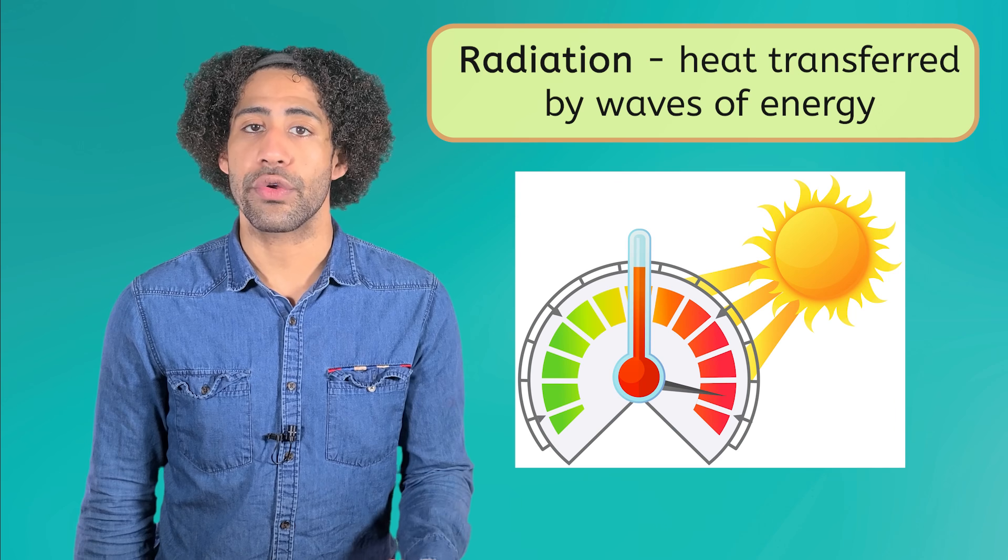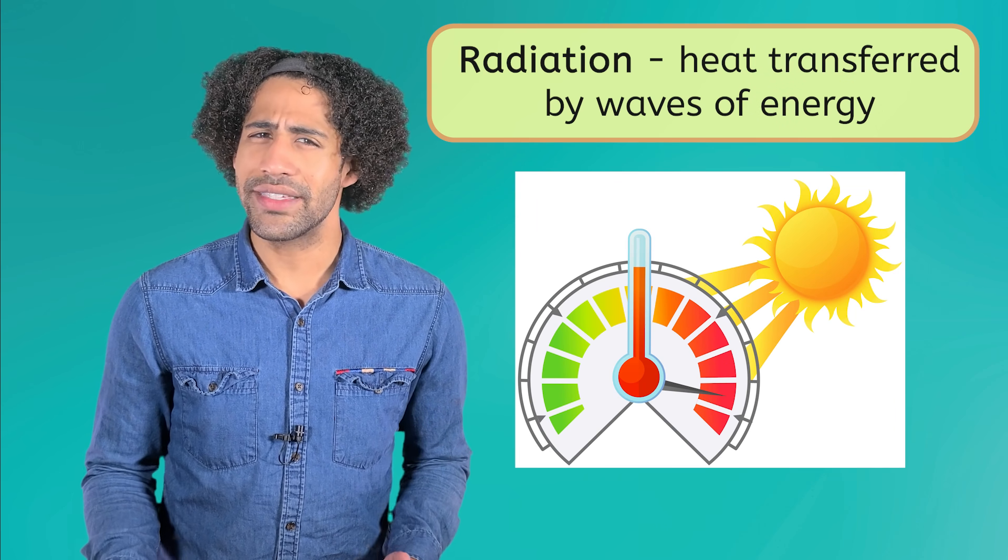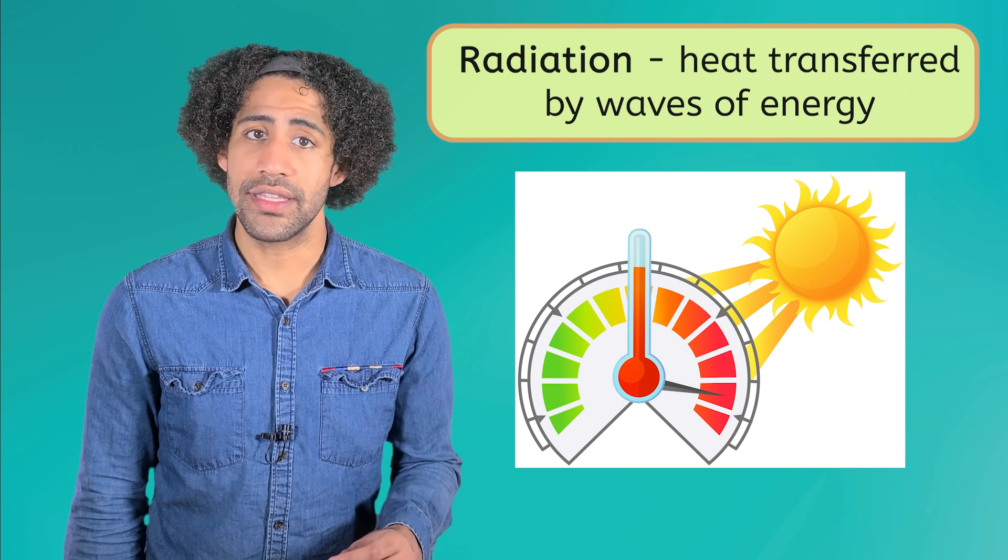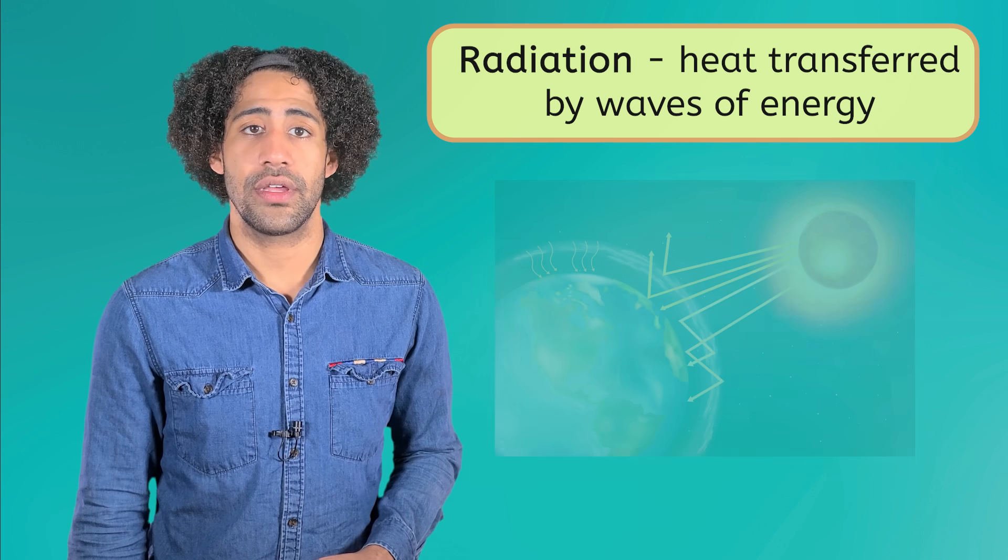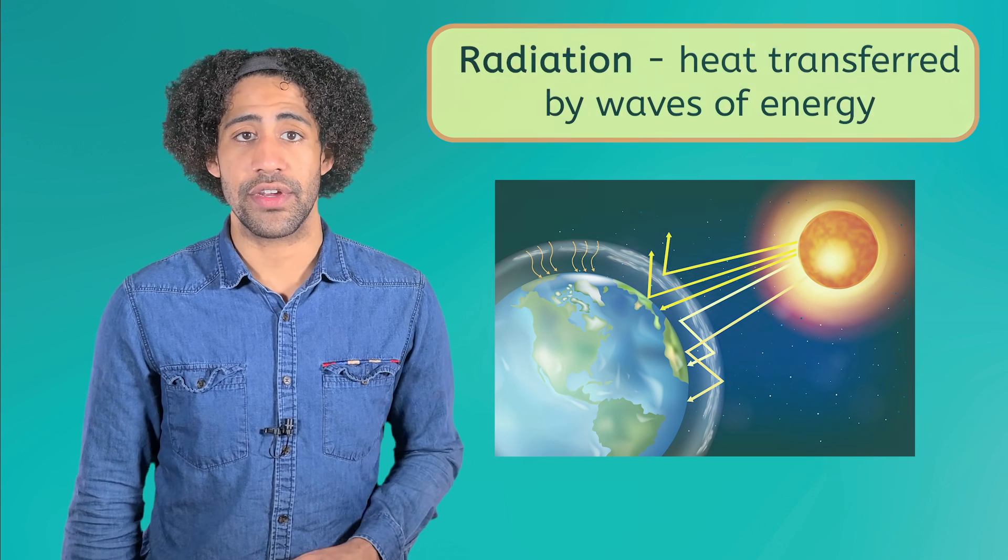The surface of the Earth absorbs a ton of heat energy from the Sun. So why isn't the dirt burning hot every time we touch it? Well, it's because this isn't the only way radiation leads to heat transfer in the atmosphere. The ground also radiates the heat it absorbed back into the lower layers of the atmosphere.